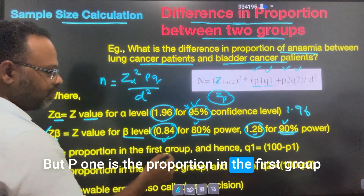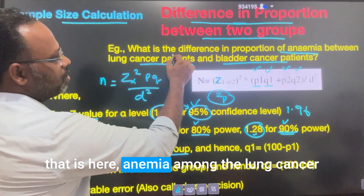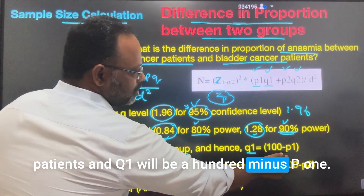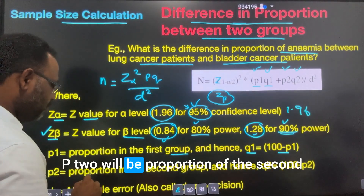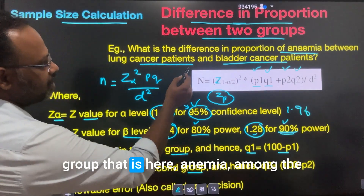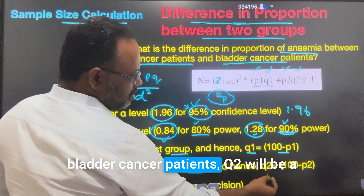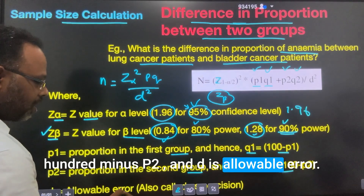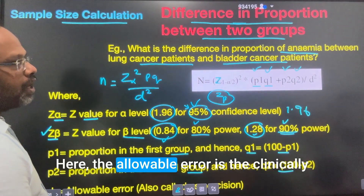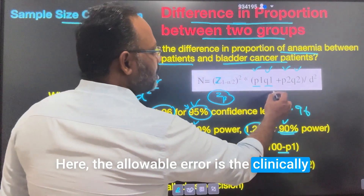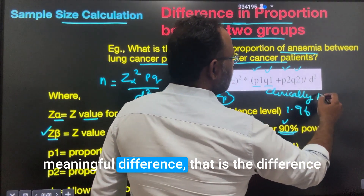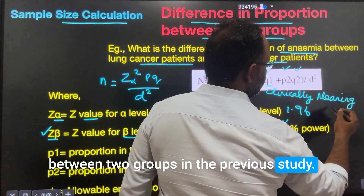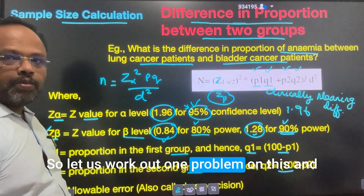P1 is the proportion in the first group — here anemia among lung cancer patients — and Q1 = 100 − P1. P2 is the proportion in the second group — anemia among bladder cancer patients — and Q2 = 100 − P2. D is the allowable error, which here represents the clinically meaningful difference — the difference between the two groups found in the previous study.